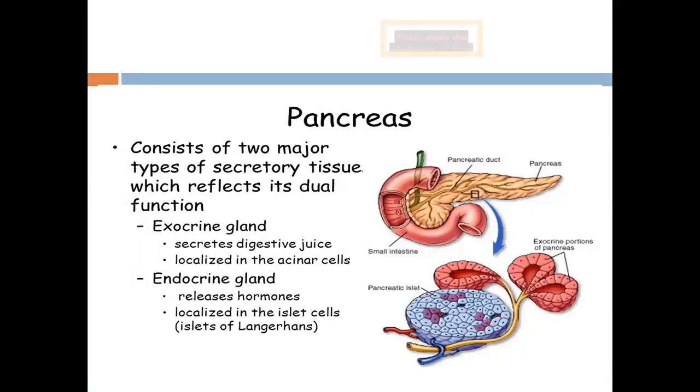Pancreas, as we know, is situated on the posterior body wall deep to the peritoneum. It has four regions: uncinate process, head, body, and tail.